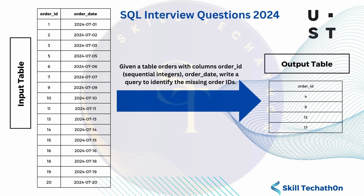If we look into the input table, we have order IDs 1, 2, 3 — and 4 is missing. Then 5, 6, 7 — and 8 is missing. Then 9, 10, 11 — and 12 is missing. Then 13, 14, 15, 16 — and 17 is missing. Then 18, 19, 20.